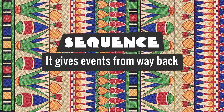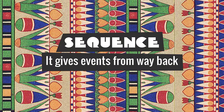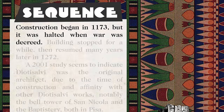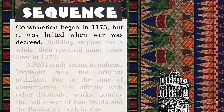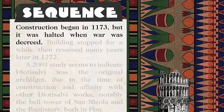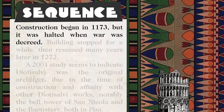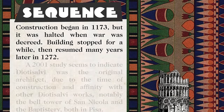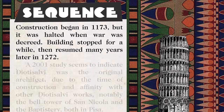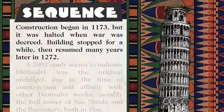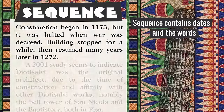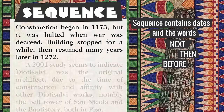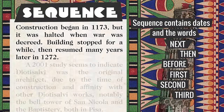The structure called sequence gives events from way back to most recent. 'Construction began in 1173, but it was halted when war was decreed. Building stopped for a while, then resumed many years later in 1272.' Sequence contains dates and the words next, then, before, first, second, and third.